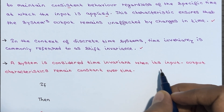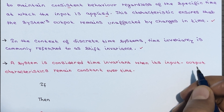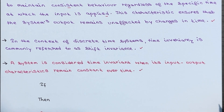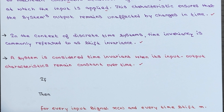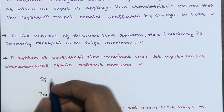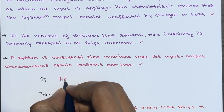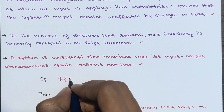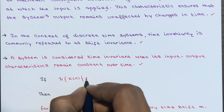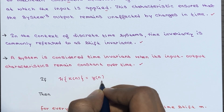A system is considered time invariant when its input-output characteristics remain constant over time — meaning they do not change with time. A relaxed system H is time invariant or shift invariant if and only if when H of x(n) equals y(n),